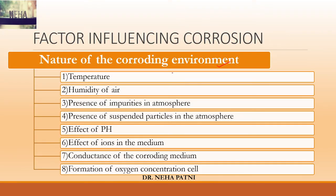Let us go ahead with the second type of factors influencing corrosion — the environment. The first and foremost is temperature: if temperature increases, obviously the reaction and diffusion rate increase, so the corrosion rate will also get enhanced. The second is humidity of air. If humidity exceeds a critical level, it adds moisture to the environment, and if moisture is present, electrochemical cell development may take place.